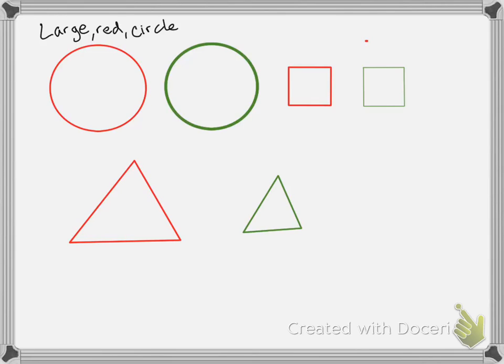I have this next piece is a large but it's a green circle. So these two shapes are the same except for they have one thing different and that is the color of the circle.